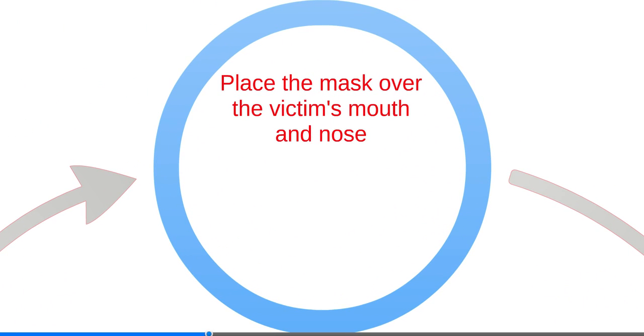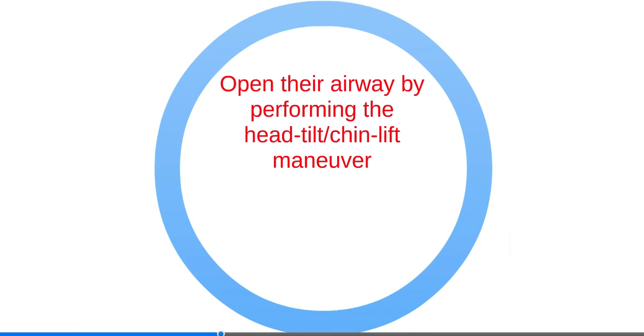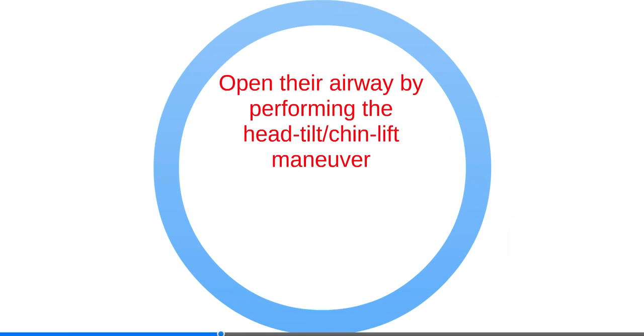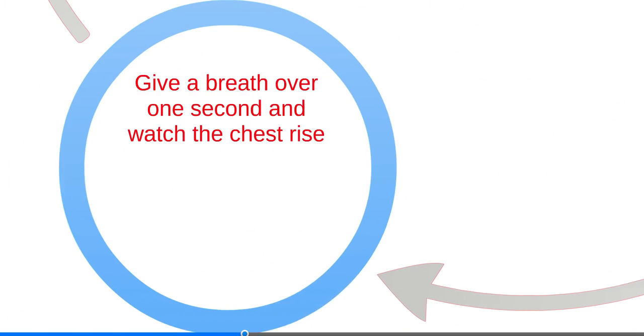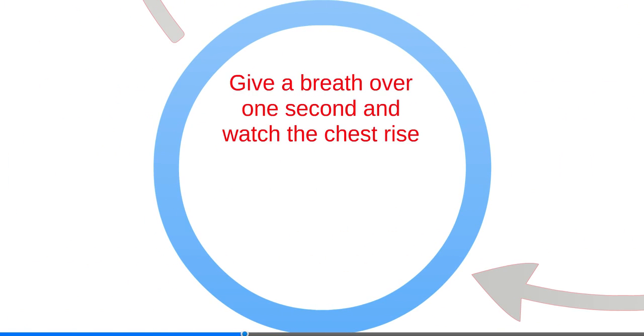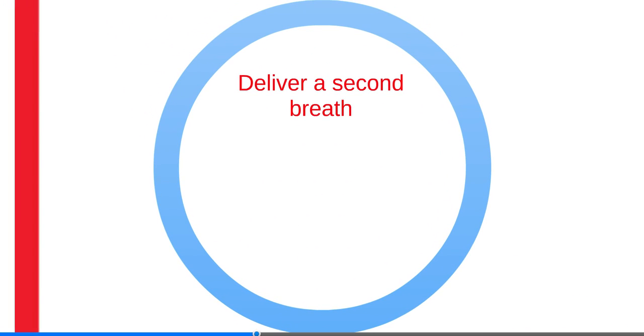Place the mask over the victim's mouth and nose. Open their airway by performing the head tilt-chin lift maneuver. Ensure a good seal between the mask and their face. Give a breath over one second and watch the chest rise. Deliver a second breath.